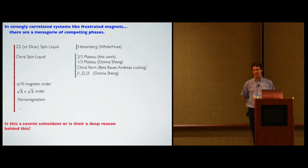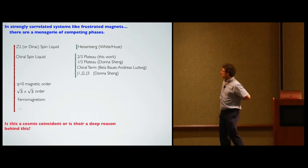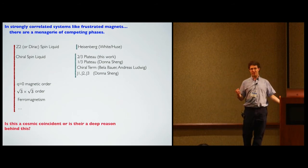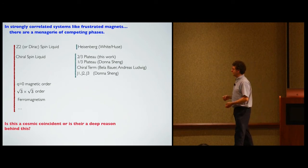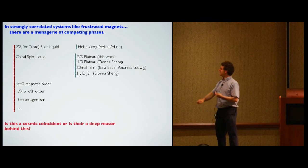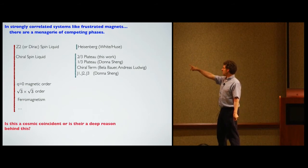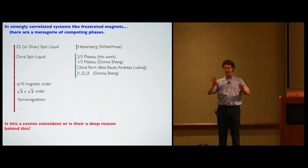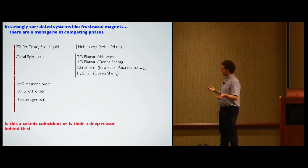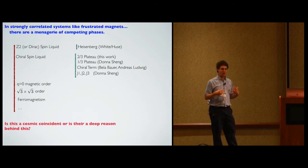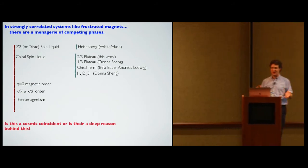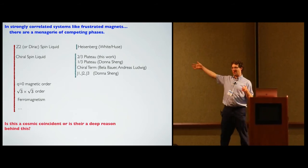In strongly correlated systems like these frustrated magnets, there tends to be a menagerie of competing phases. On the Kagome lattice, there's a Z2 spin liquid that Wen, White, and Hughes found; one, two, three, four chiral spin liquids found by various groups including us; Q=0 magnetic order; root-3 by root-3 order; ferromagnetism — in a very small part of phase space. You tune the parameters of your rock a little and you get dozens of phases. Is this a cosmic coincidence or is there a deep reason? Before this project, the general consensus was it's sort of coincidental.